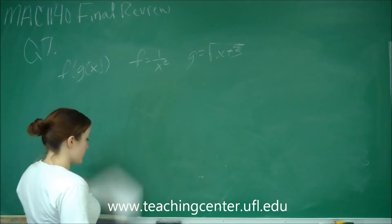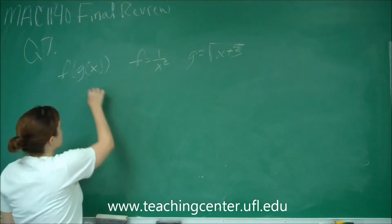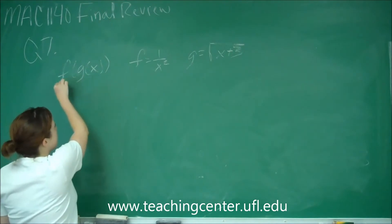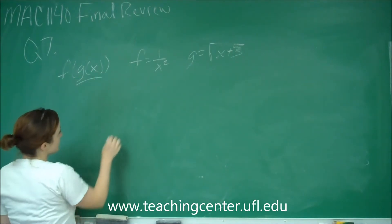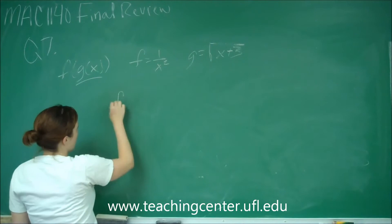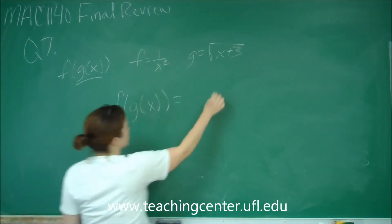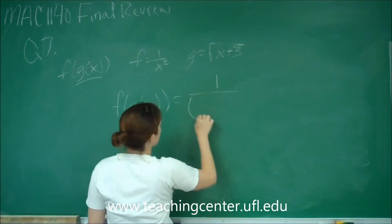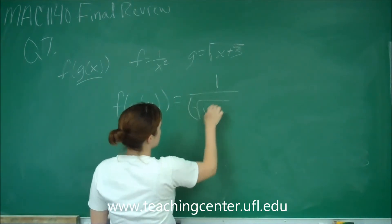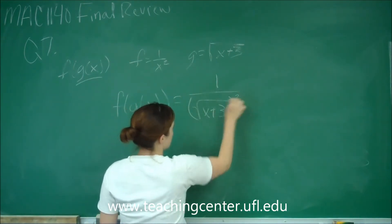Any time we see an x in our f of x equation, we're going to plug in g of x. So this will give us f of g of x is equal to 1 over square root of x plus 3 quantity squared.